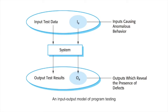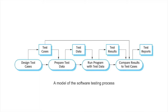The various steps involved in the testing process are: first, designing the test cases. Once the test cases are designed, the test data is prepared and sent to the program. The program runs with this test data and generates results. These results are compared to the test cases that were initially generated, and proper documentation is done. This helps in finding any errors or defects in the code and making an error-free code.